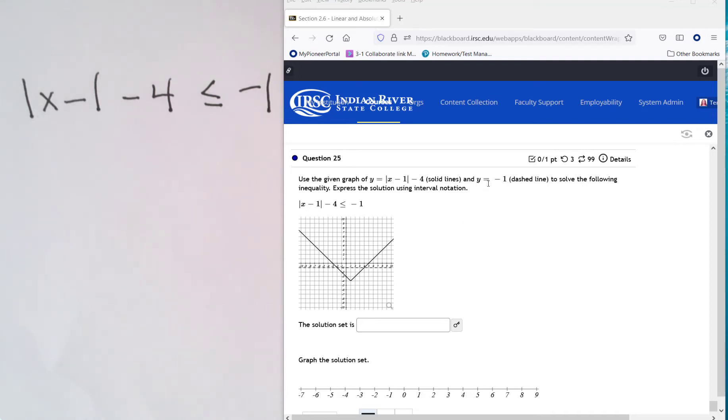The graph of y equals negative 1, remember that's a horizontal line, is a dotted line and they want you to interpret the graph to solve this absolute value inequality. So what it's asking is when is this side less than the negative 1. So you're looking at the graph.